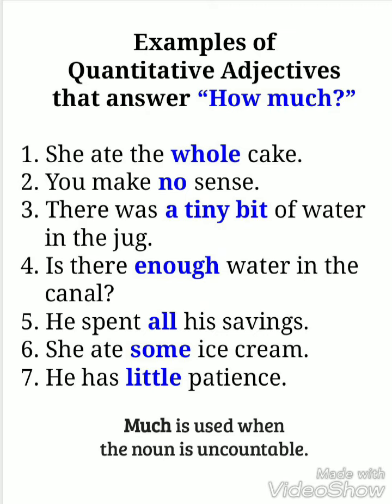Number seven: he has little patience, which means he can't wait. He wants to go get things done and does not want to hear his wife talking too much. He has little patience.